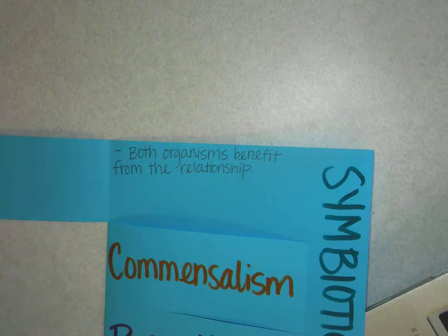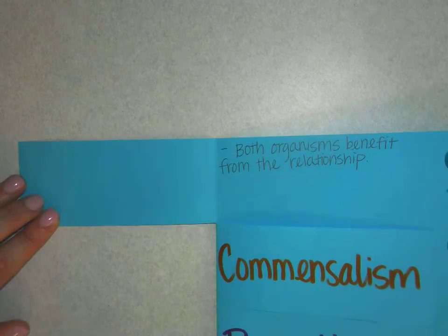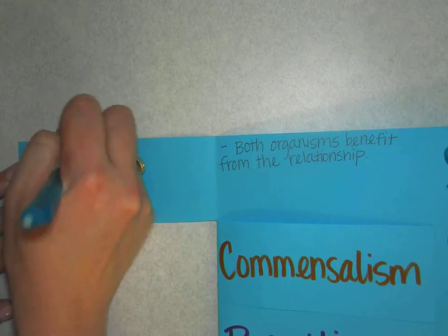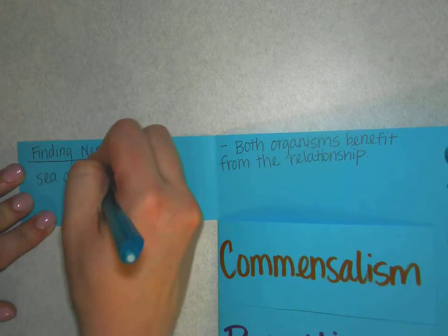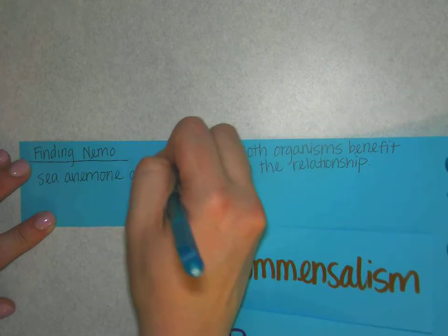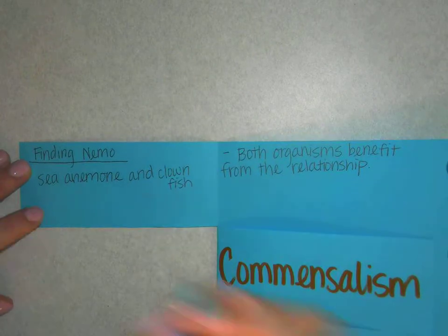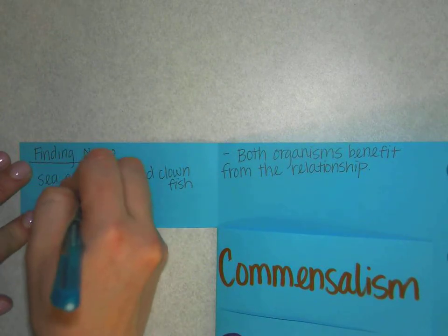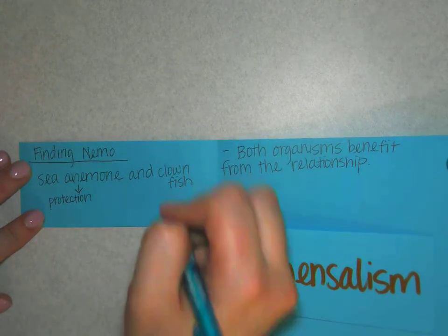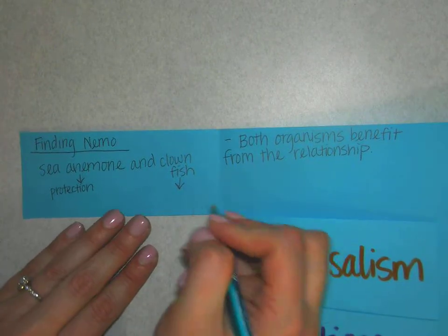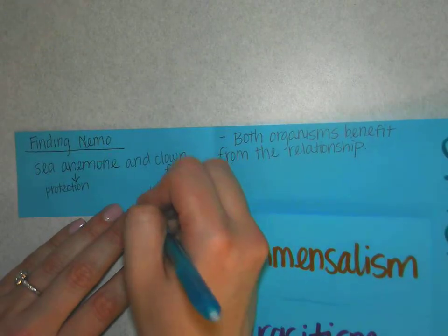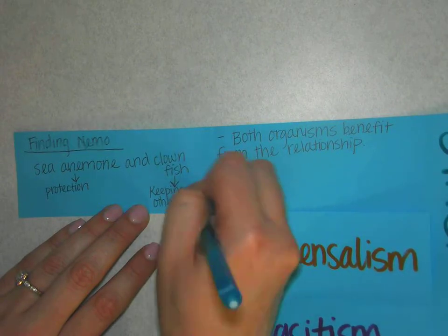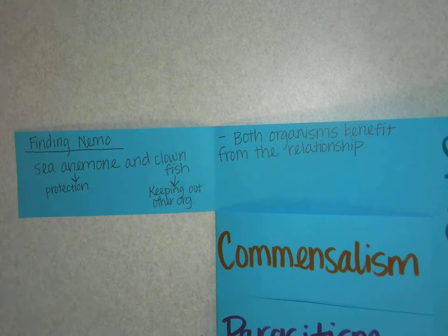So an example — we've got to think of Finding Nemo, right? We have the sea anemone and the clownfish. The sea anemone is providing protection for the clownfish, and the clownfish is keeping out other organisms.